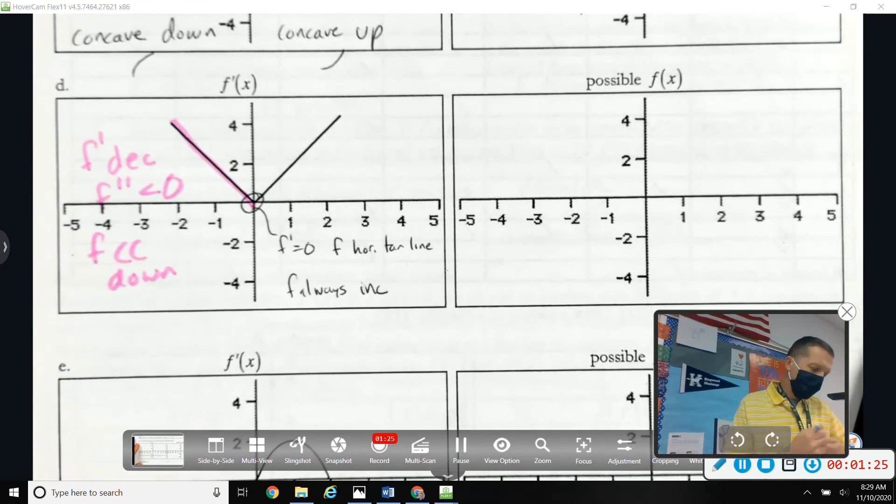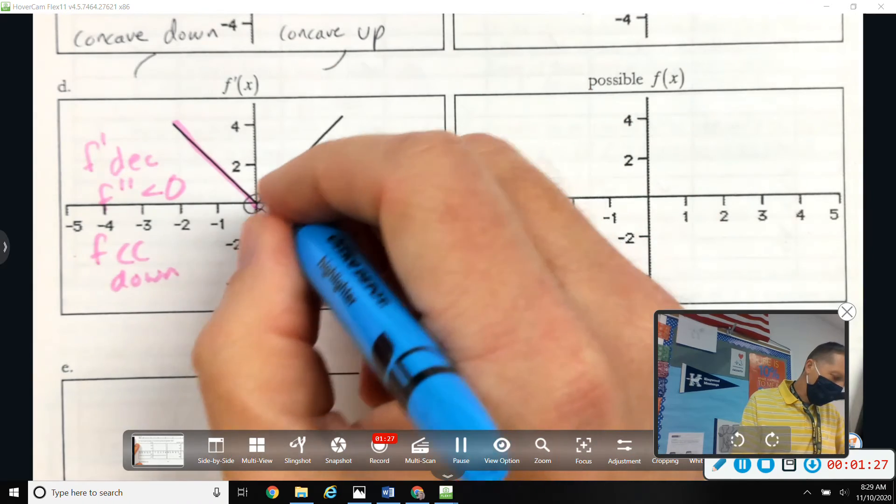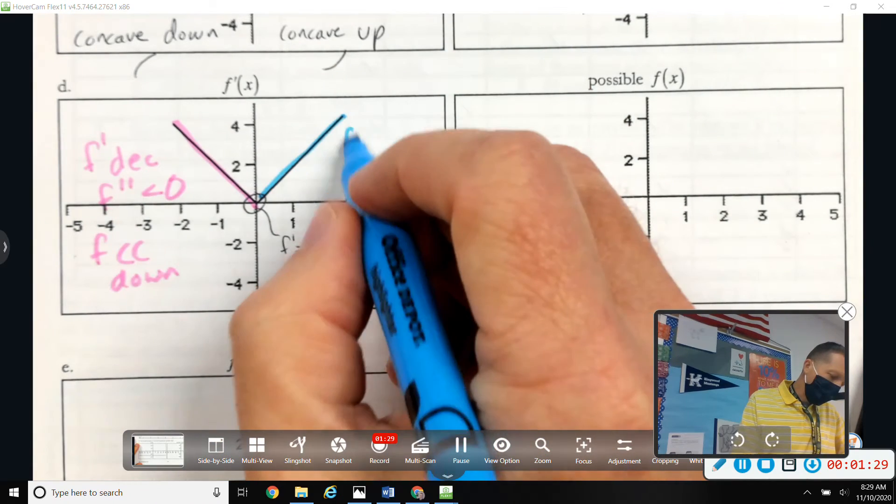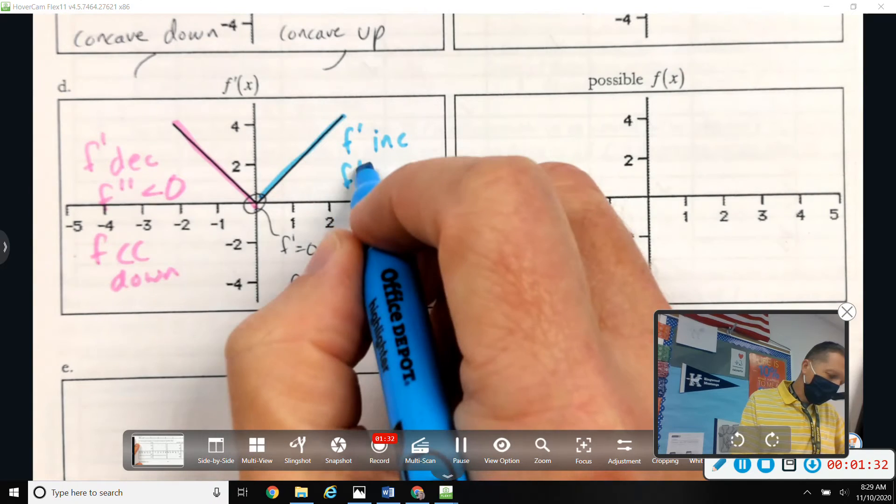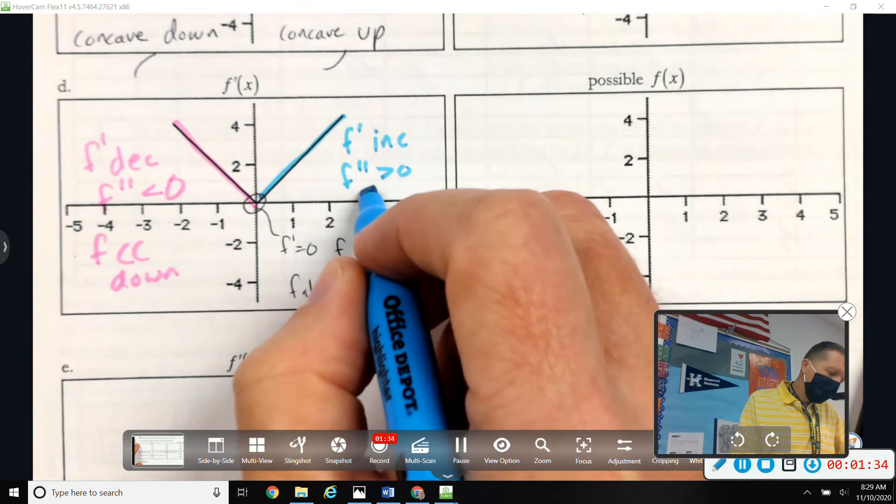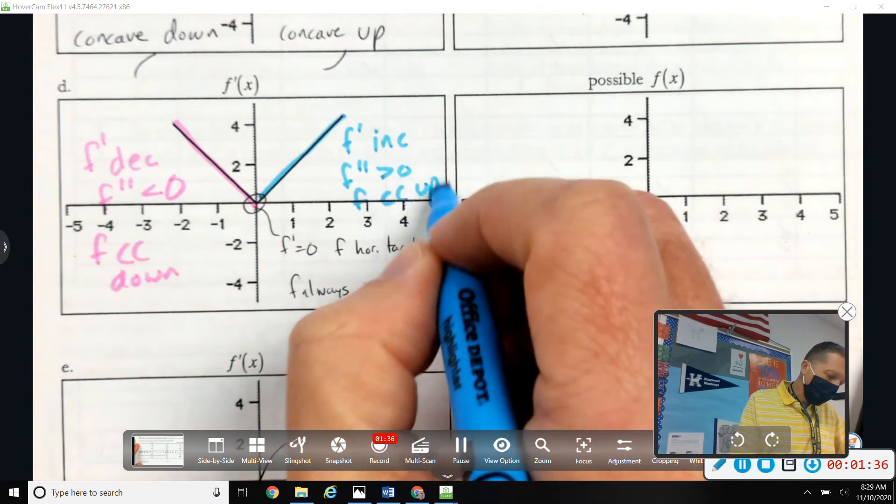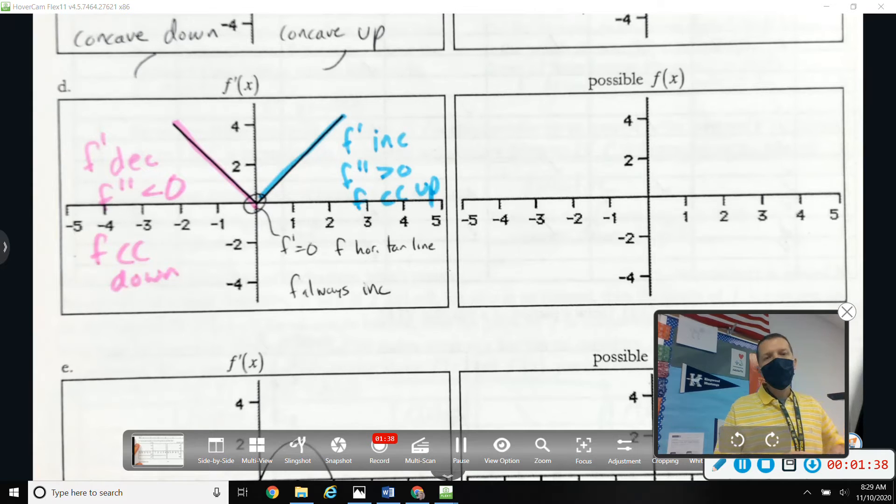On the left side. On the right side, all of that stuff is backwards. F prime is increasing, which means F double prime is positive, which means F is concave up. All those things fit together.